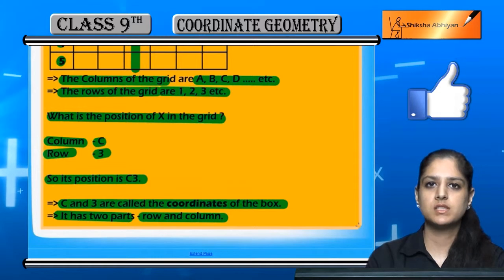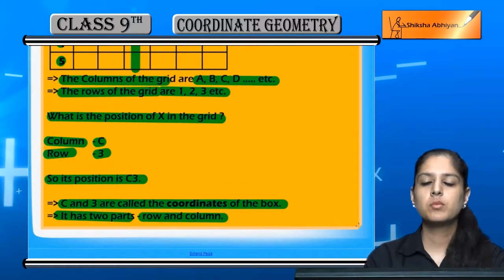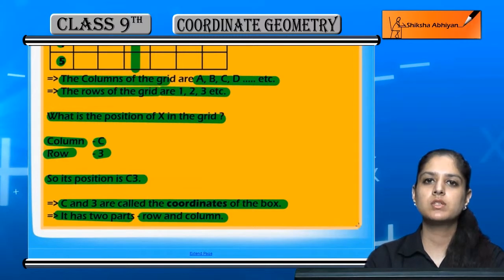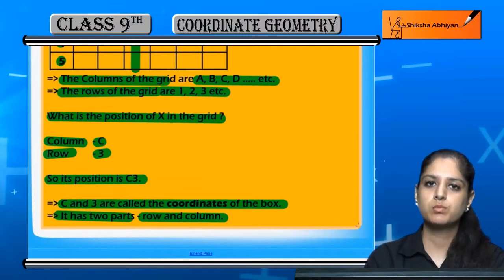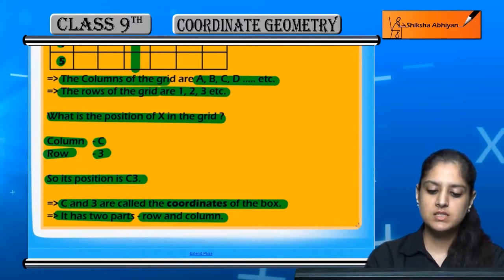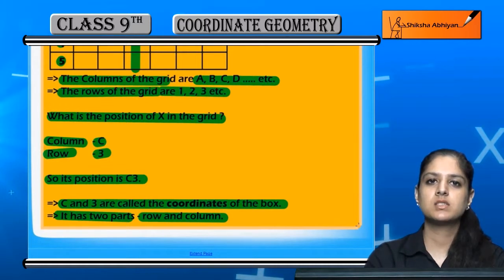We take an ordered pair. In an ordered pair, the two numbers are the coordinates of the point. Like C and 3, which are the coordinates of X in this box.